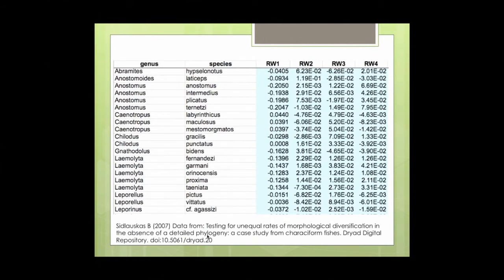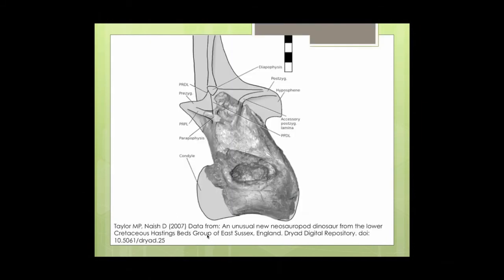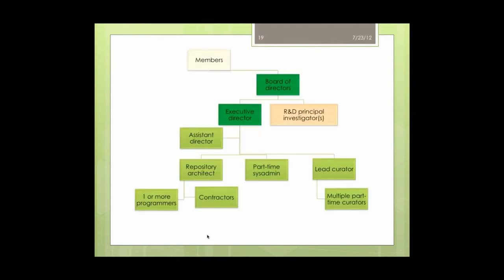The vast majority of data in Dryad is tabular information, usually in spreadsheet format — sometimes with easily discernible column headings and sometimes with headings that are meaningless unless you've read the accompanying article. We also have genetic-type data, phylogenetic trees expressing species relationships, images, bits of source code used to process data, and Mathematica notebooks. It's really a random selection of content, and that's what Dryad was designed for.